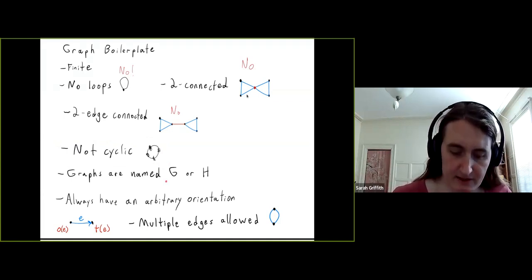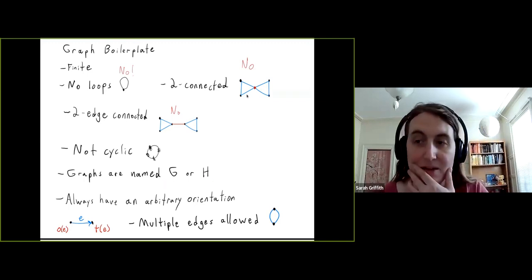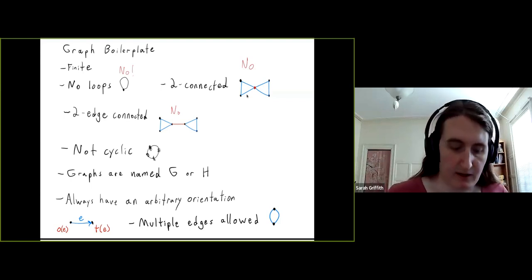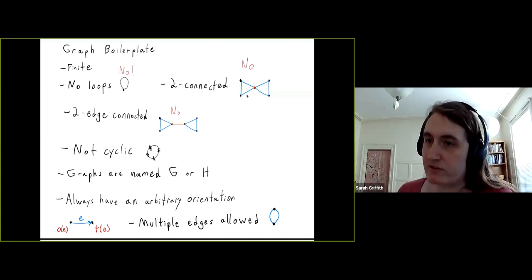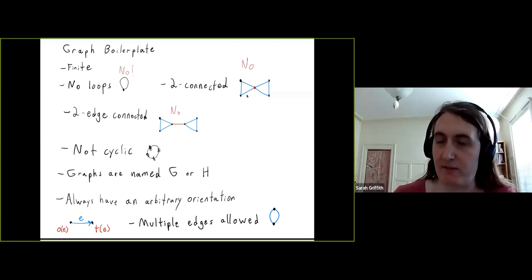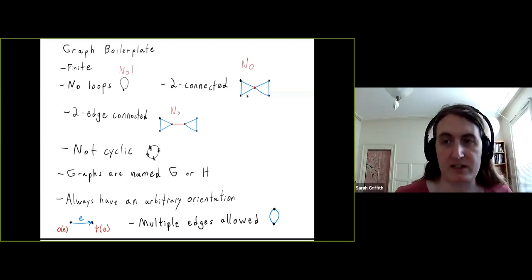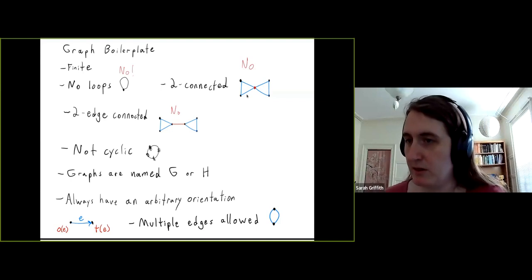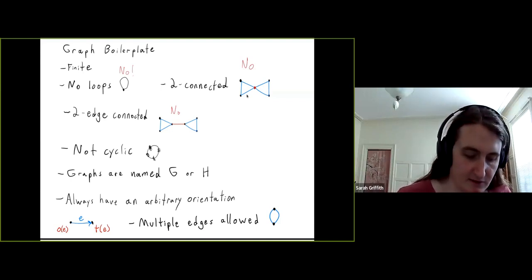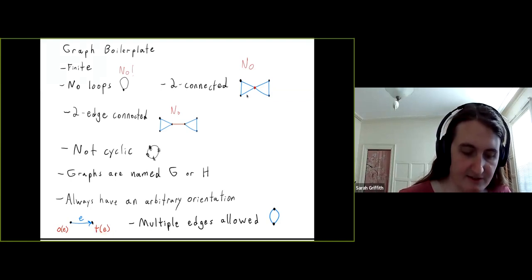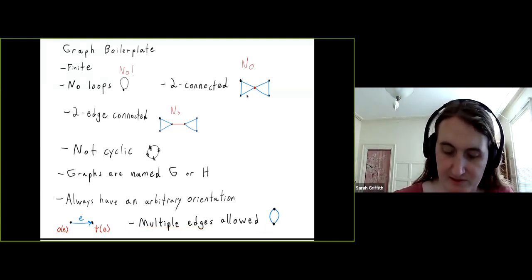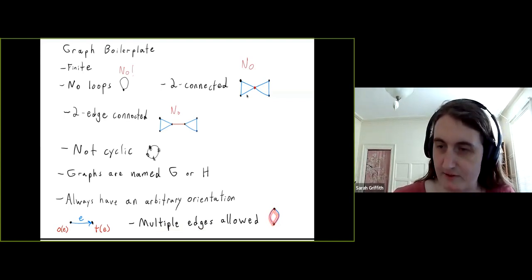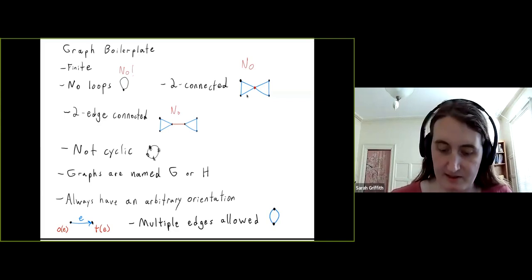Graphs will be called G or H. Graphs always have some specified orientation — that's really important to the data of the kind of objects we're going to define, but the orientation itself doesn't actually matter. An orientation means each edge has a specified target vertex and a specified origin vertex. Also, we haven't ruled out multiple edges, so two vertices connected by two edges between them is perfectly fine.